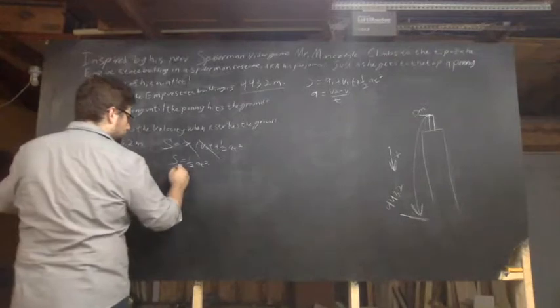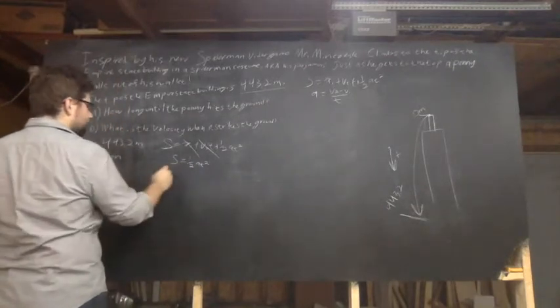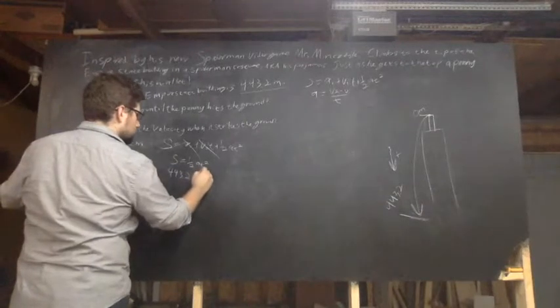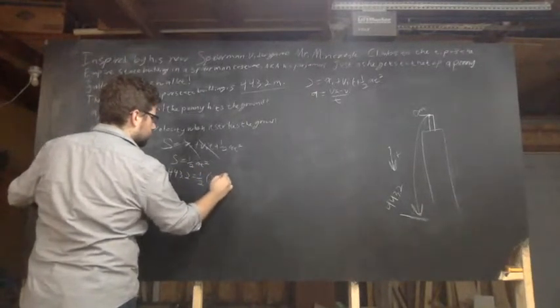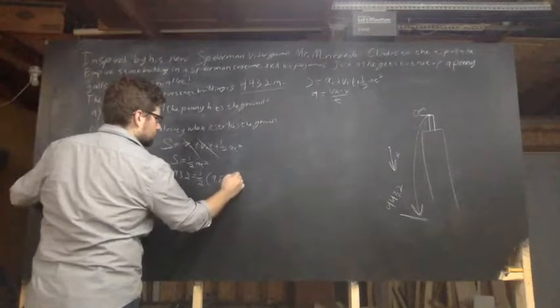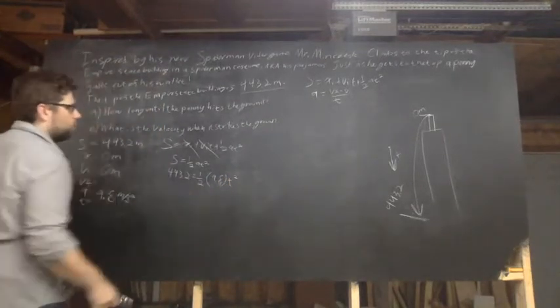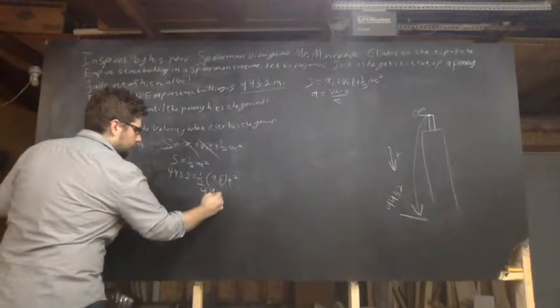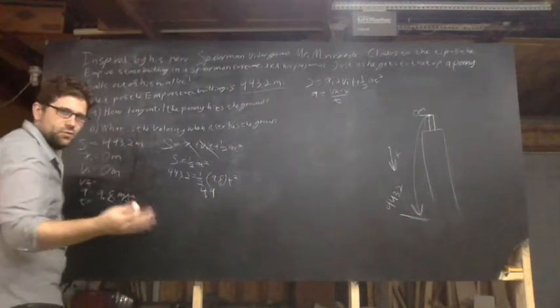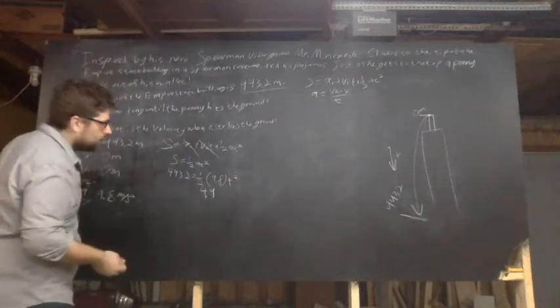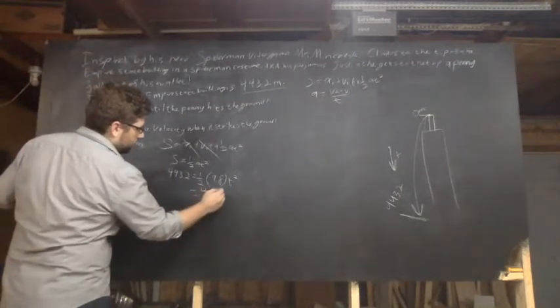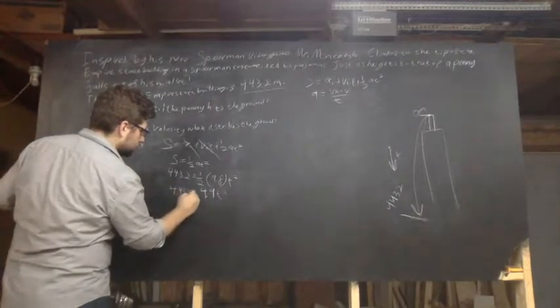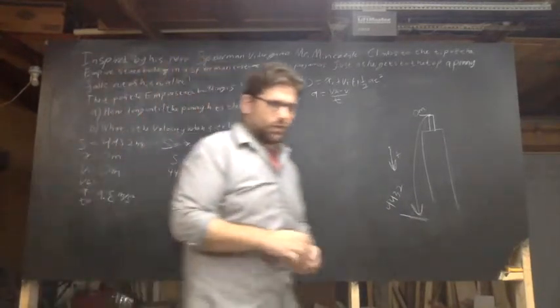So my A is 9.8, my S is 443.2, one half A T squared. One half times 9.8 is 4.9. It's a common enough calculation that we do, you will end up memorizing this one. So 4.9 T squared equals 443.2. That's the extent of what I can do in my head.